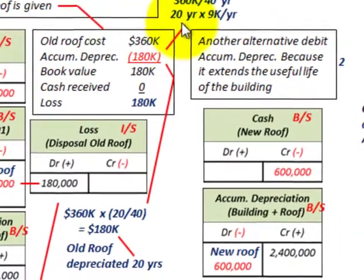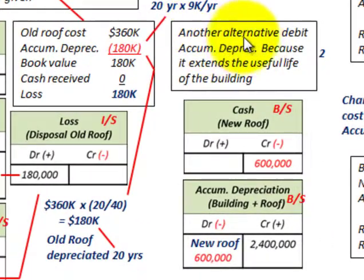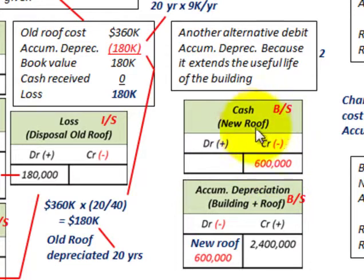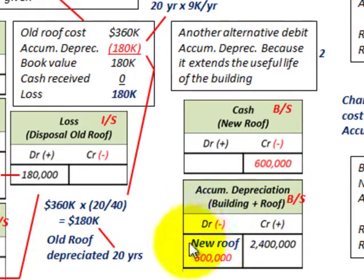Now let's look at an alternative method — this is not the preferable method, but it is an alternative. The alternative would be to debit the accumulated depreciation account, because the new roof extends the useful life of the building. We would credit cash for $600,000 — the cost of the new roof — and debit or reduce accumulated depreciation by the cost of the new roof of $600,000.